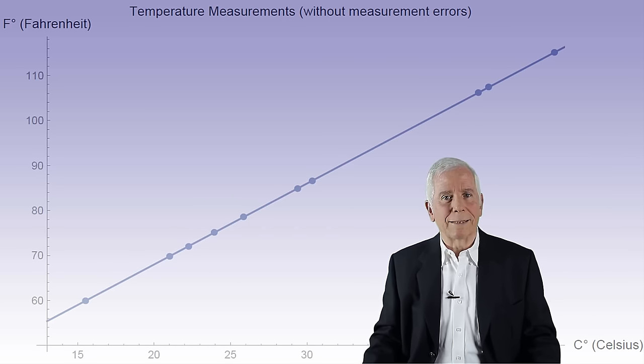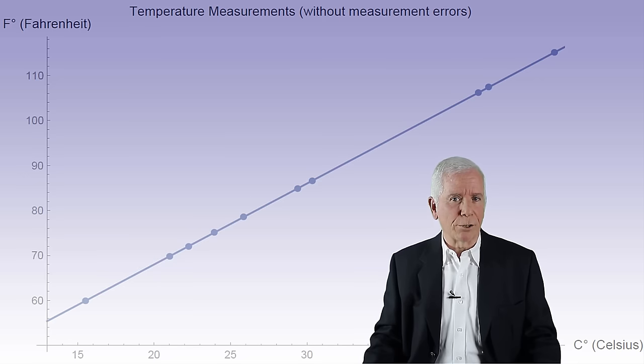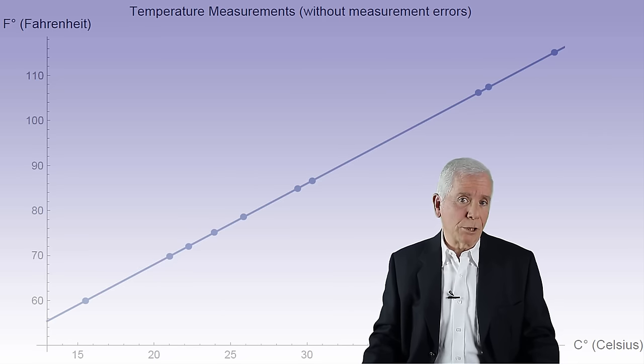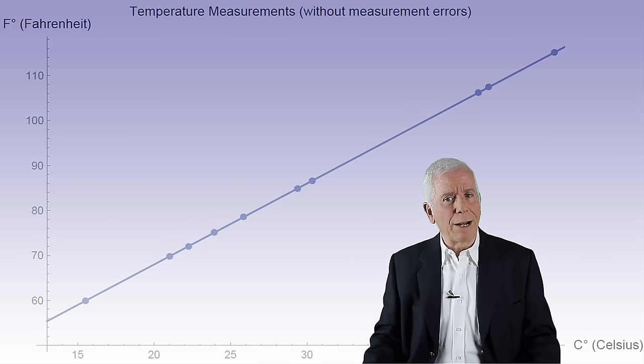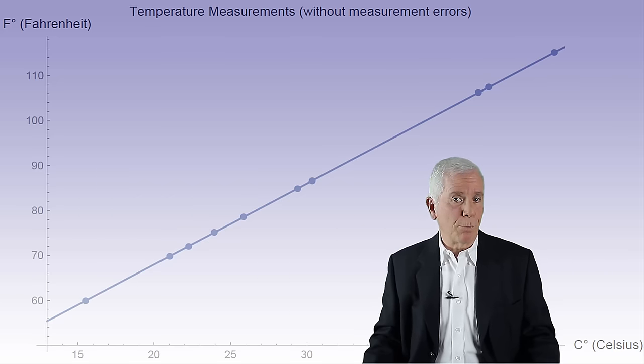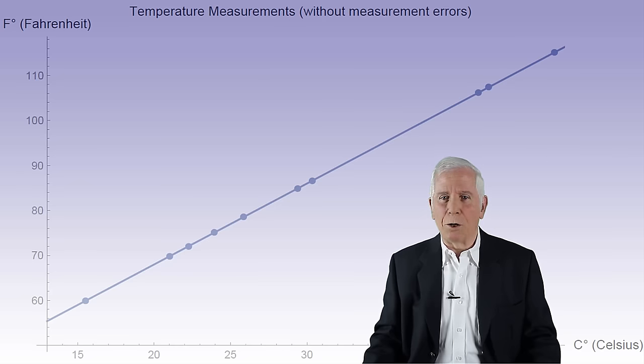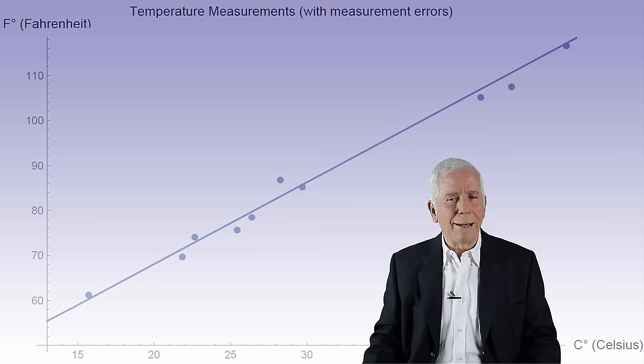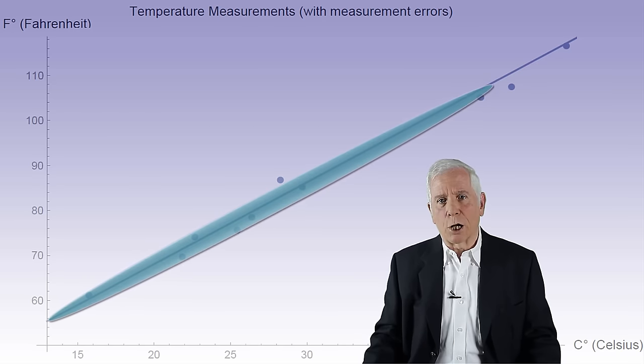In practice, each measurement or observation has an element of randomness and or measurement error. Therefore, an actual sample of measurements would more likely look like this. In other words, the points now do not align exactly on a straight line but are close to one.